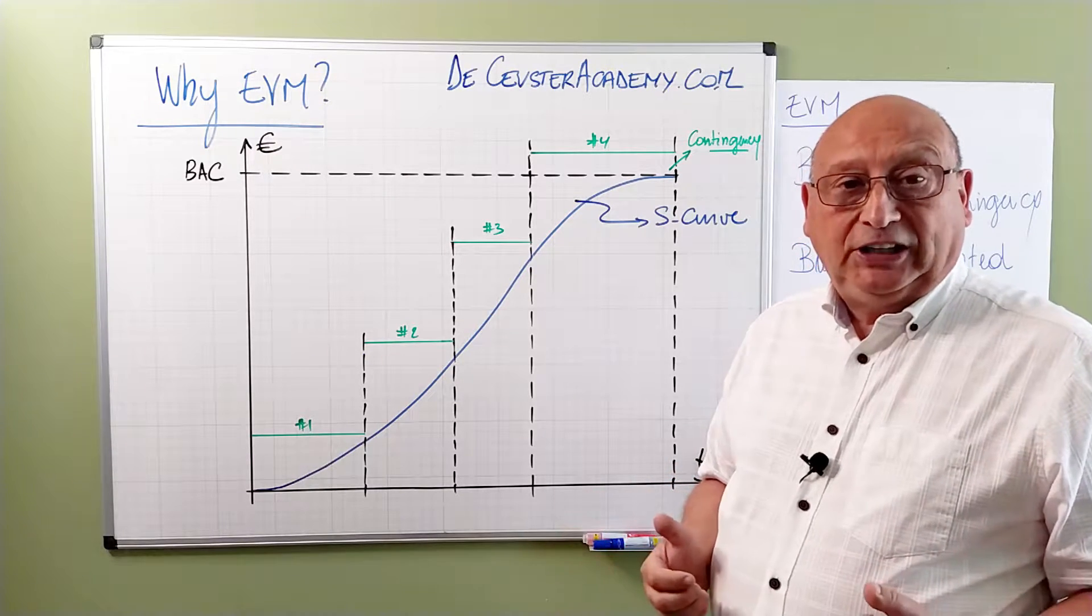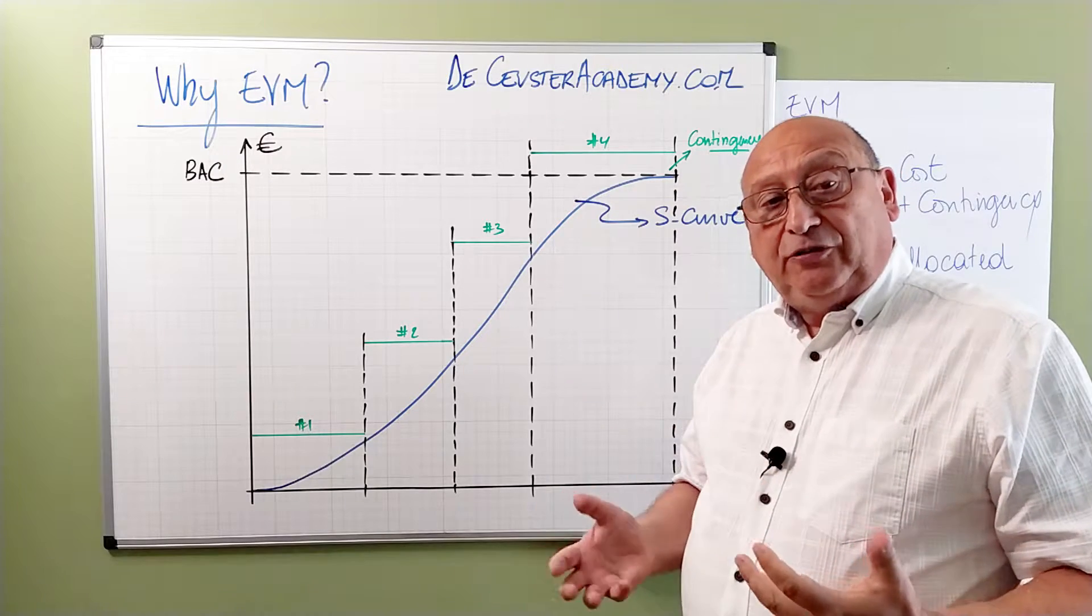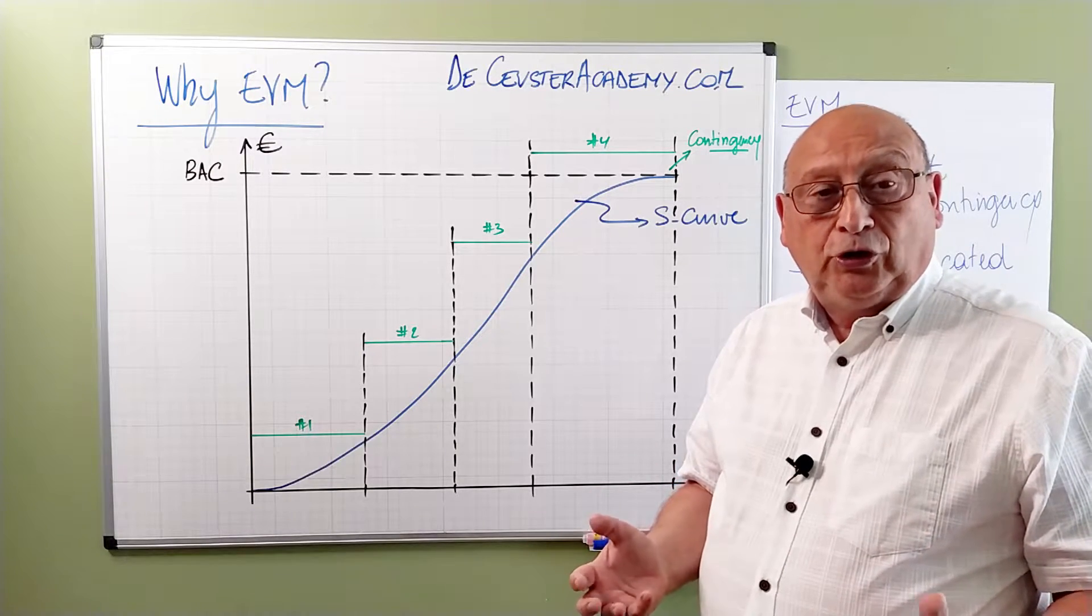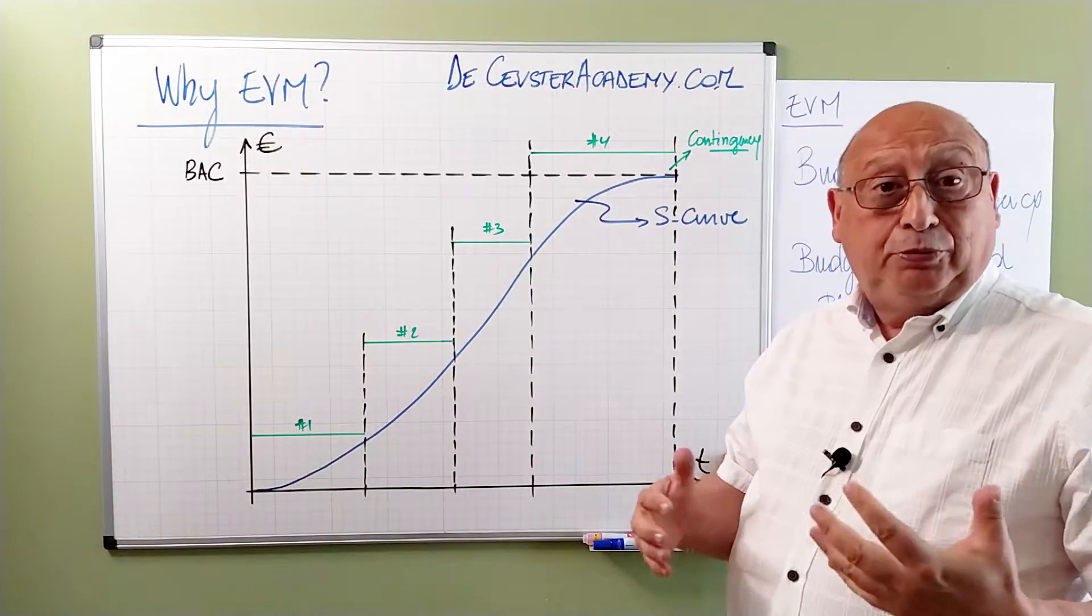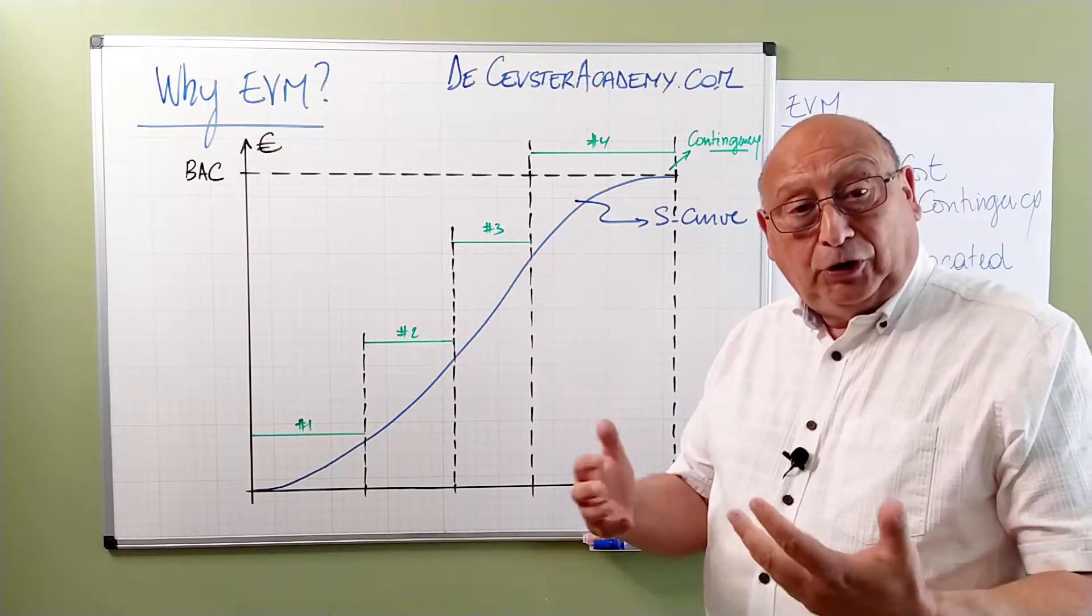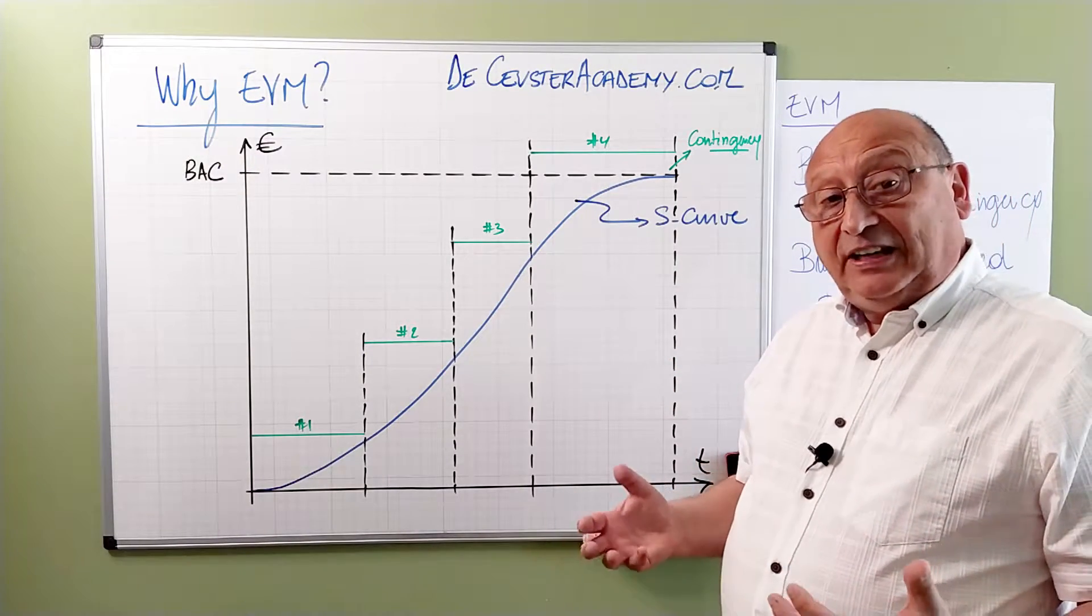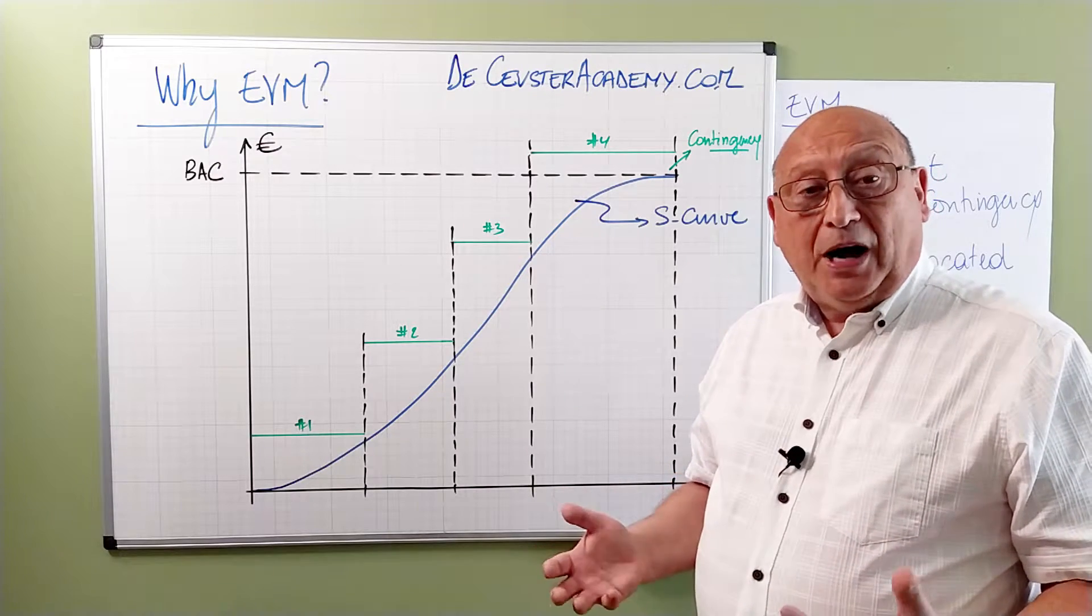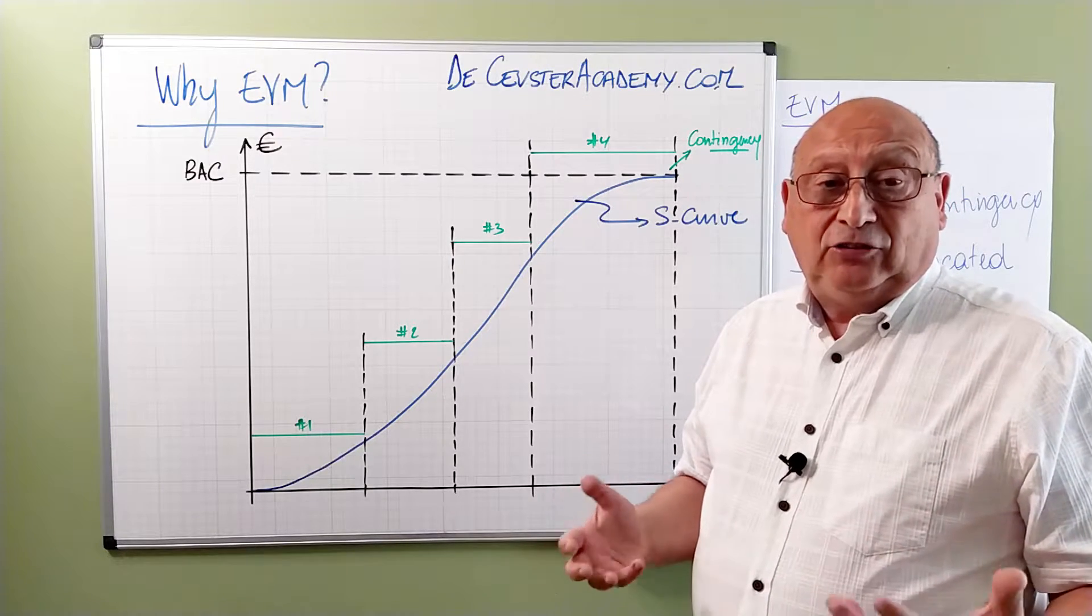Budgets are typically allocated over different periods. Once a project is approved, there is also a budget approved for separate parts of the project. For example, the first budget here is approved for the first part of the work. By the time we reach the end of that budgeting period, we get more budget, and so on until we finish the project. What we are going to look at now is what happens at a certain moment and what can be a problem with the information that we have.